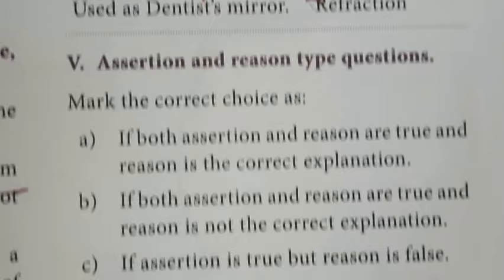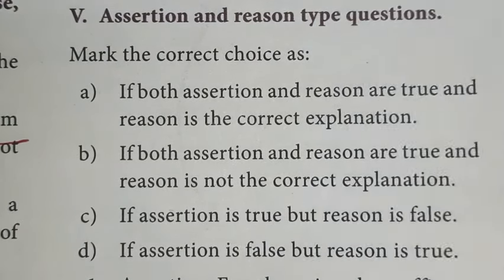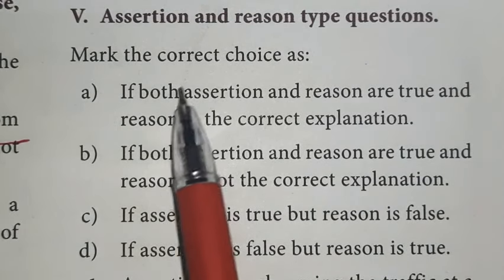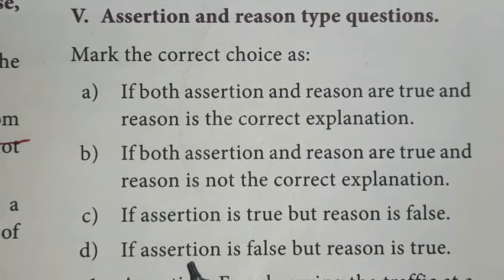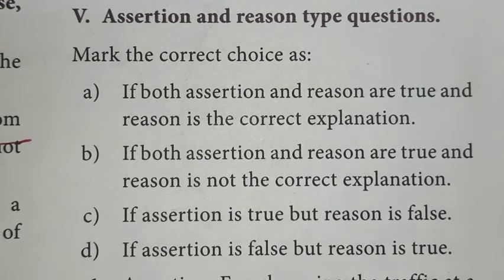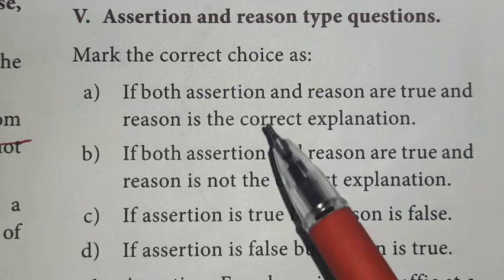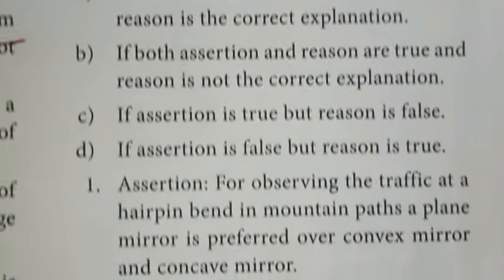Next, part five, assertion and reason type questions. Mark the correct choice. You are given four choices. Now, you have to read the assertion and reason, then you have to select the correct choice.